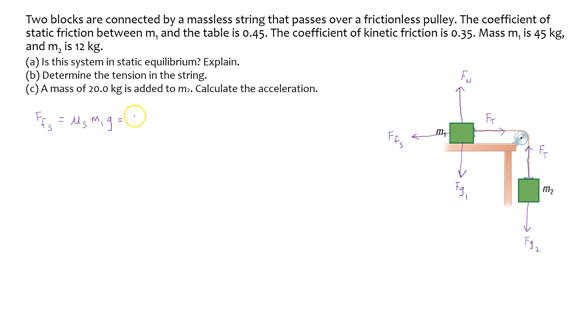So that's going to be 0.45 times 45 kilograms times 9.8 meters per second squared. And that's going to equal 198.5 Newtons. Okay, so that's the static friction on mass 1.